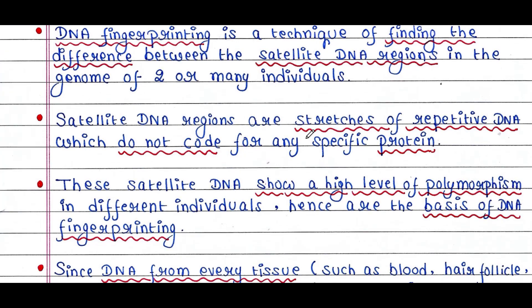Satellite DNA regions are stretches of repetitive DNA which do not code for any specific protein. Our DNA contains both coding and non-coding parts. The coding part makes proteins; the non-coding part doesn't make protein — it is considered junk. 99.9% of the base sequence among humans is the same, covering mainly the coding regions. The remaining 0.1% is actually different, which includes the non-coding part, or satellite DNA. The differences in the sequence of satellite DNA make every individual unique in their phenotypic appearance.